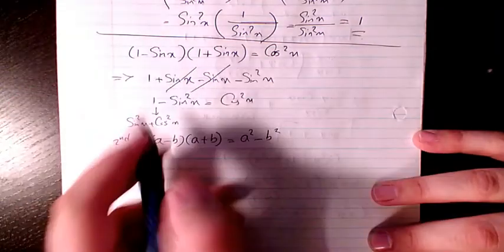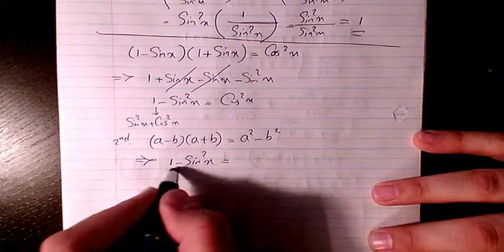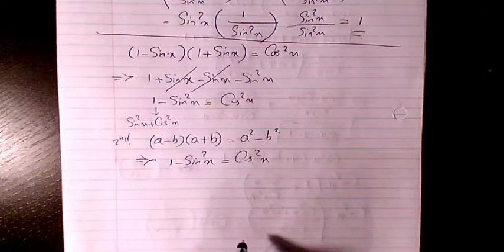So I will have, for the first one I will have, 1 minus sine squared x. So again, as we know, 1 minus sine squared x will be equal to cosine squared x.